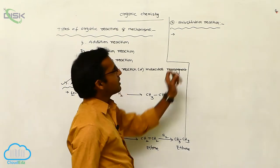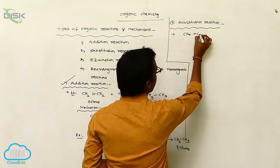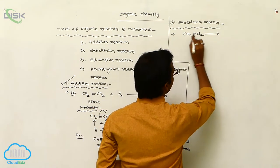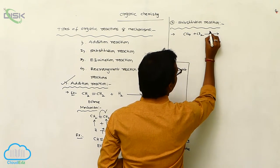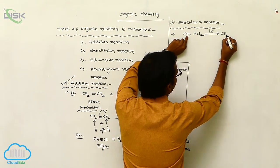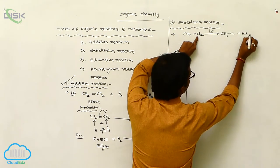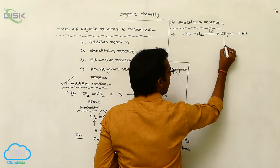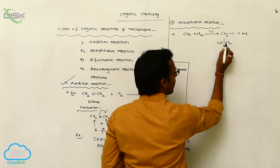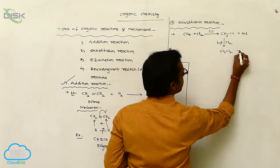Generally, alkanes participate in substitution reactions. For example, methane reacts with chlorine — in the presence of photochemical conditions, one of the four hydrogen atoms is replaced by chlorine, giving CH3Cl plus HCl. Again reacted with Cl2 under photochemical conditions, another hydrogen is replaced, converting to CH2Cl2 plus HCl.